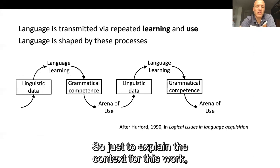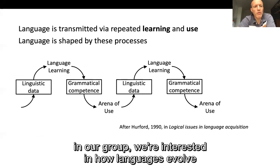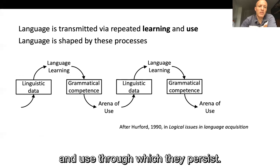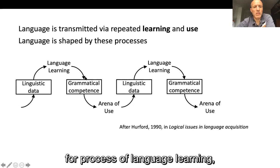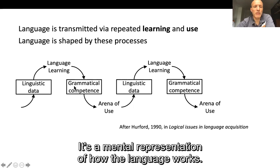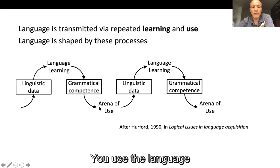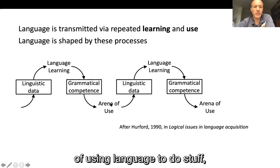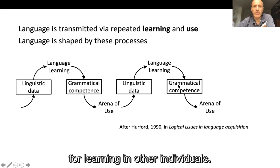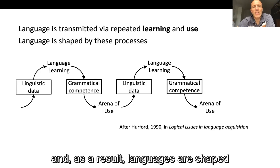To explain the context for this work, in our group we're interested in how languages evolve as a result of the cycle of learning and use through which they persist. Individuals encounter linguistic data in the world — people using language — and that data forms the basis for language learning, enabling them to form a mental representation of the grammar of that language. That grammar is then used in what Harford called the arena of use to meet communicative goals, generating linguistic data which might form the basis for learning in other individuals. So language is transmitted through this cycle of learning and use, and languages are shaped by those processes.